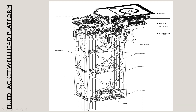This is the overall 3D view of the jacket type fixed wellhead platform. As I'm showing with my cursor, these are the jacket legs. These small pipes are called j-tubes — used for instrumentation cables and electrical cables. You can also see the riser; the riser pipe is used for main production of oil or gas.